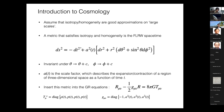The metric consistent with isotropy and homogeneity is the FLRW line element: ds² = -dt² + a²(t)dΣ², where t is coordinate time and a(t) is the scale factor describing how fast the universe is expanding or contracting, and dΣ² is the geometry of the constant-time slice. The standard cosmological model assumes these constant-time slices are flat — Euclidean three-dimensional space — as motivated by inflation. This gives you one free function of time: the scale factor a(t).